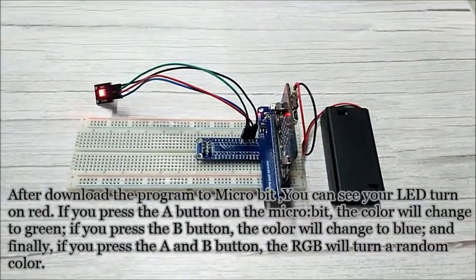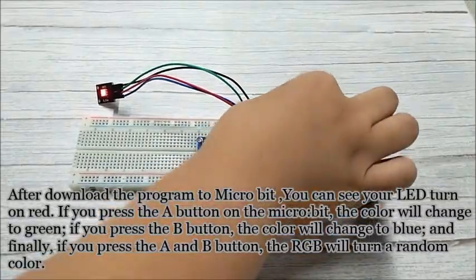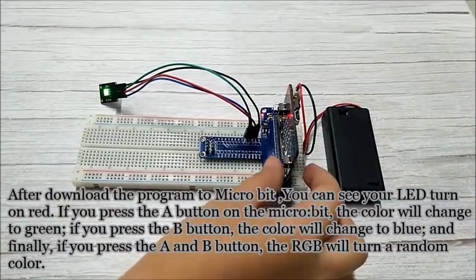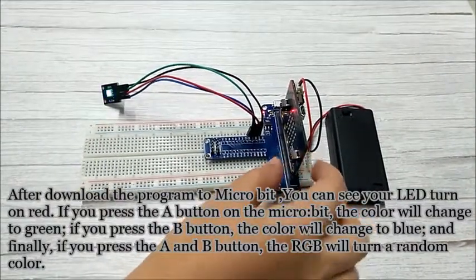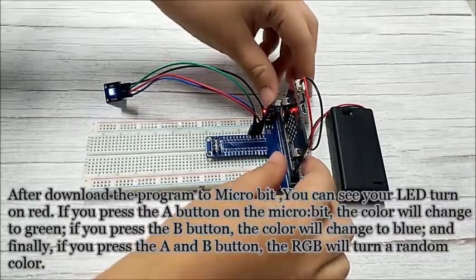After downloading the program to micro:bit, you can see your LED turn on red. If you press the A button on the micro:bit, the color will change to green. If you press the B button, the color will change to blue. And finally, if you press the A and B button, the RGB will turn a random color.